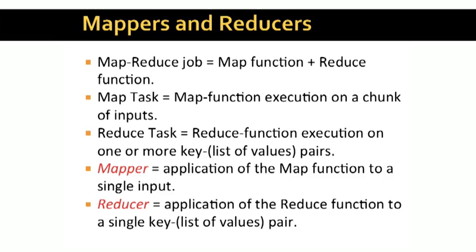It is important to observe that it doesn't matter how the mappers are grouped into MapTasks, nor does it matter how the reducers are grouped into Reduce tasks. In practice, the system will group mappers according to the physical location of their inputs, and will group reducers into as many Reduce tasks as it uses, based on some random hash function. The important point is that mappers and reducers are the fundamental units of computation during a MapReduce job.